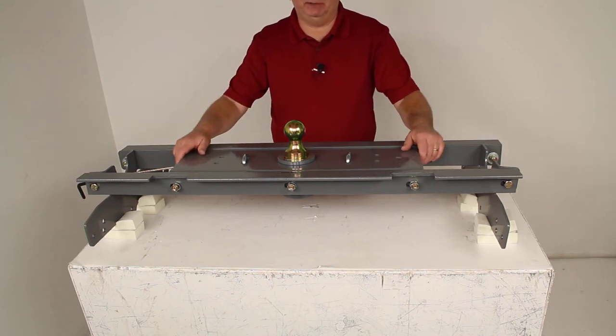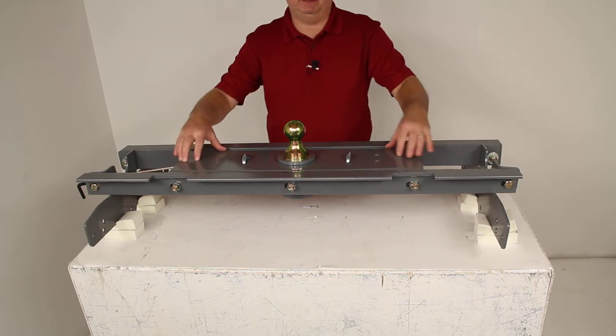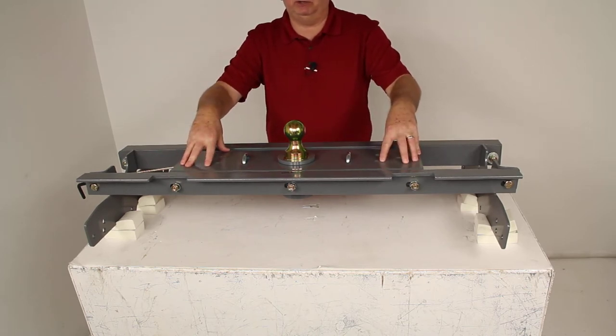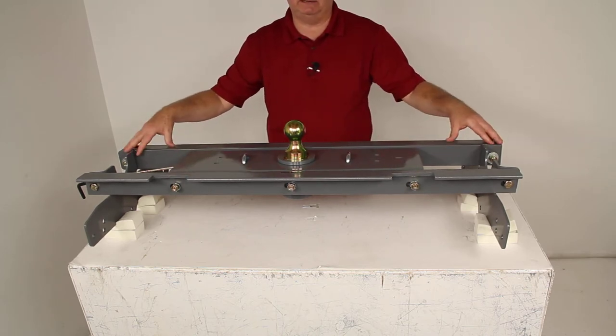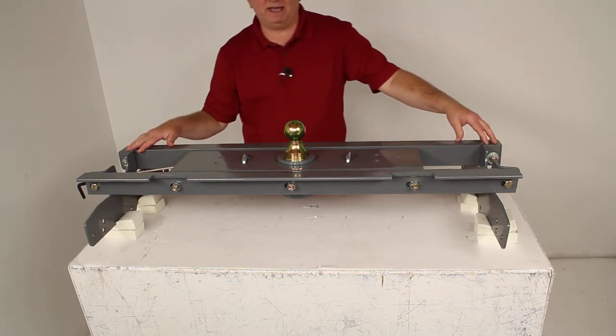Today we're going to review part number BWGNRK-1197. This is the B&W turnover ball underbed gooseneck trailer hitch with the custom installation kit. It has a 30,000 pound weight capacity.